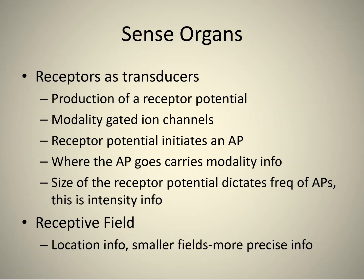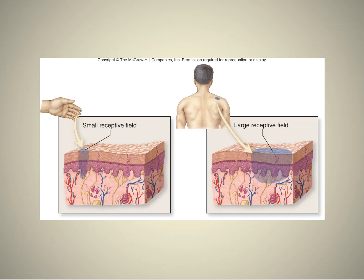We also have to talk about receptive fields, which give you location information. Smaller fields provide more precise information. This is slide four, and it's something we've already covered when we talked about the sensory homunculus in the post-central gyrus — why the face and hands are over-represented. There are much smaller receptive fields in your hand versus your back, where there are much larger receptive fields, giving less precise sensation.